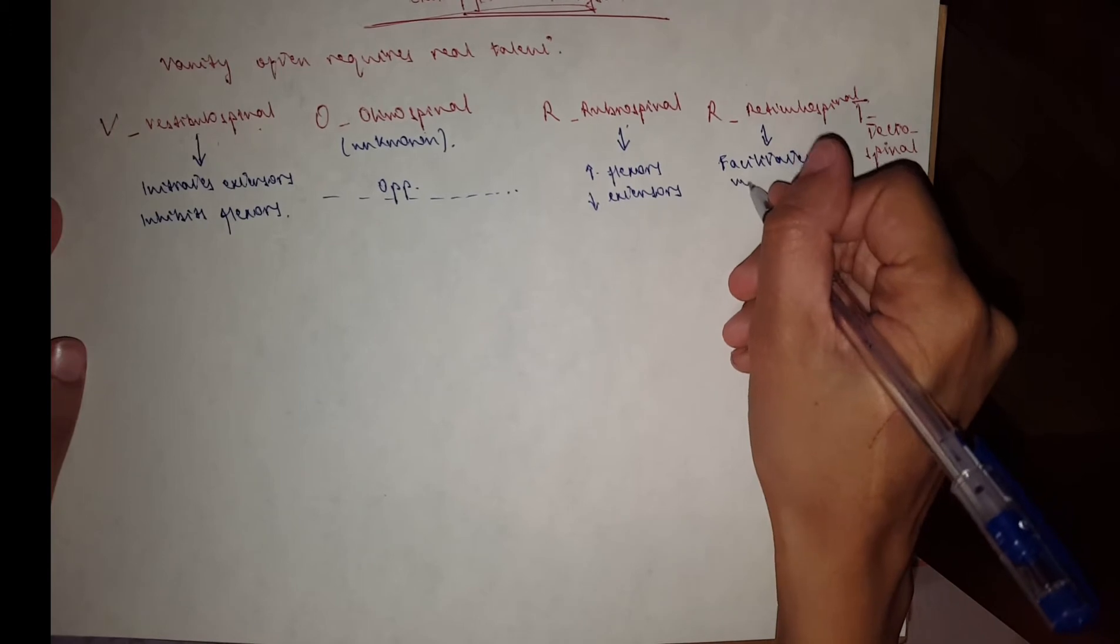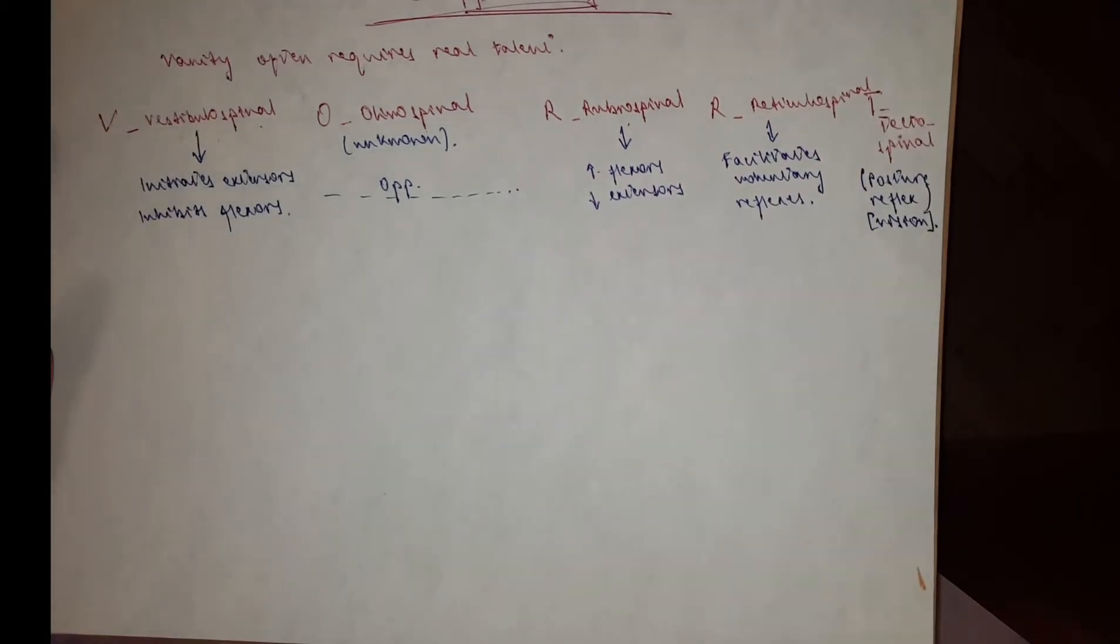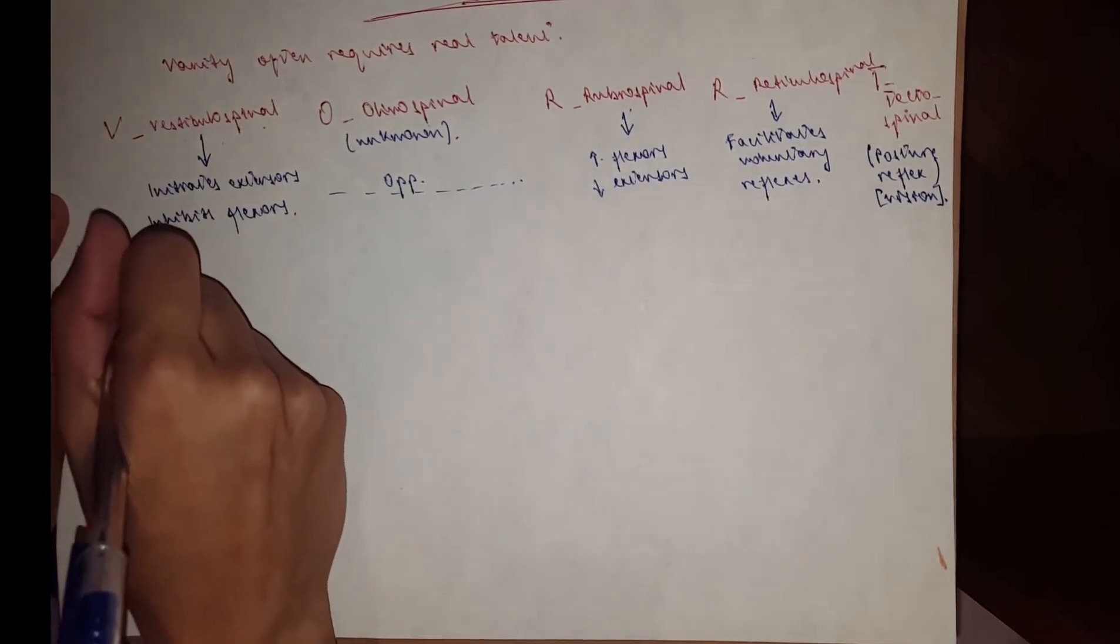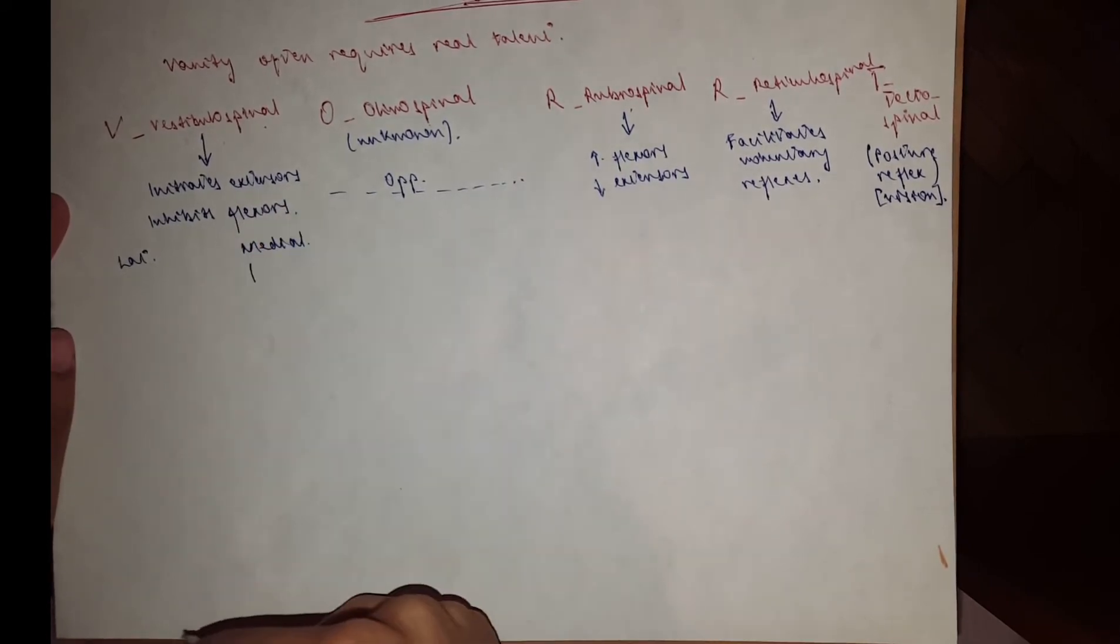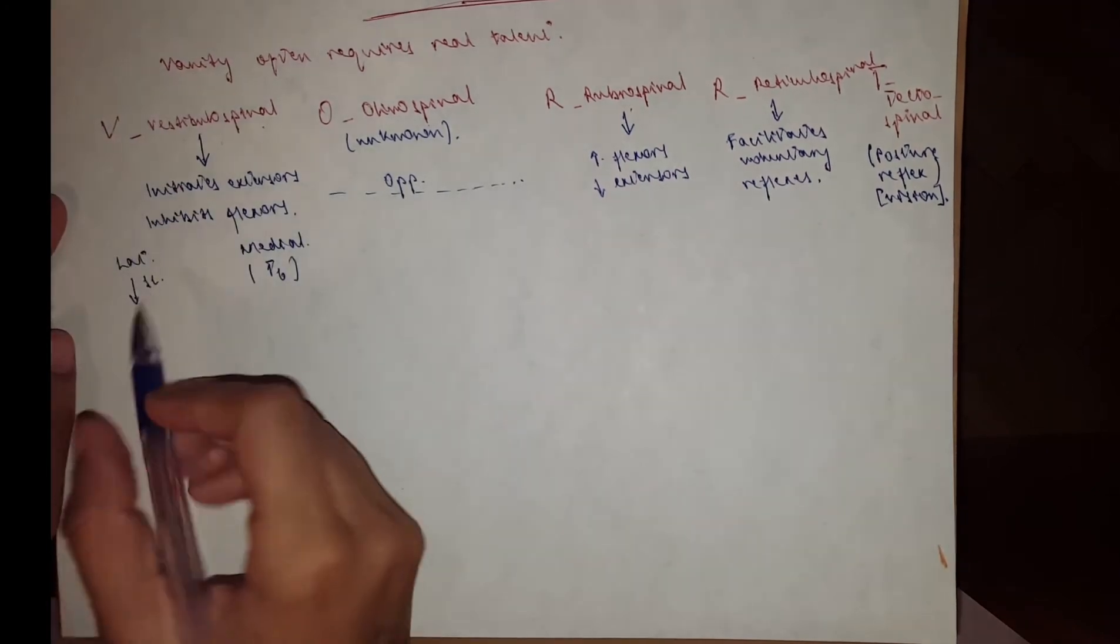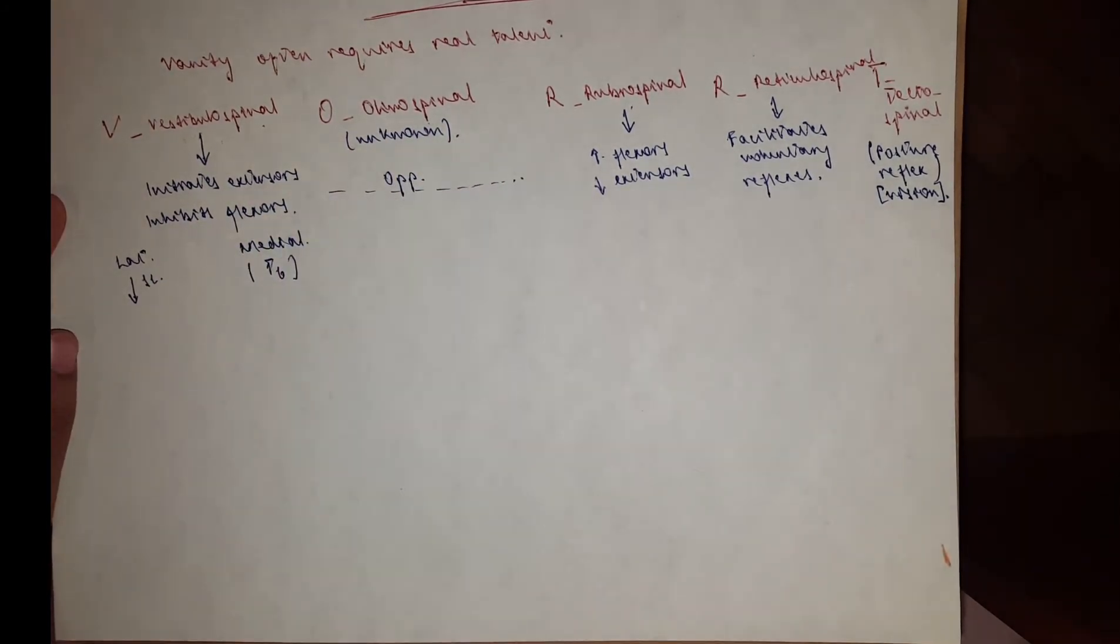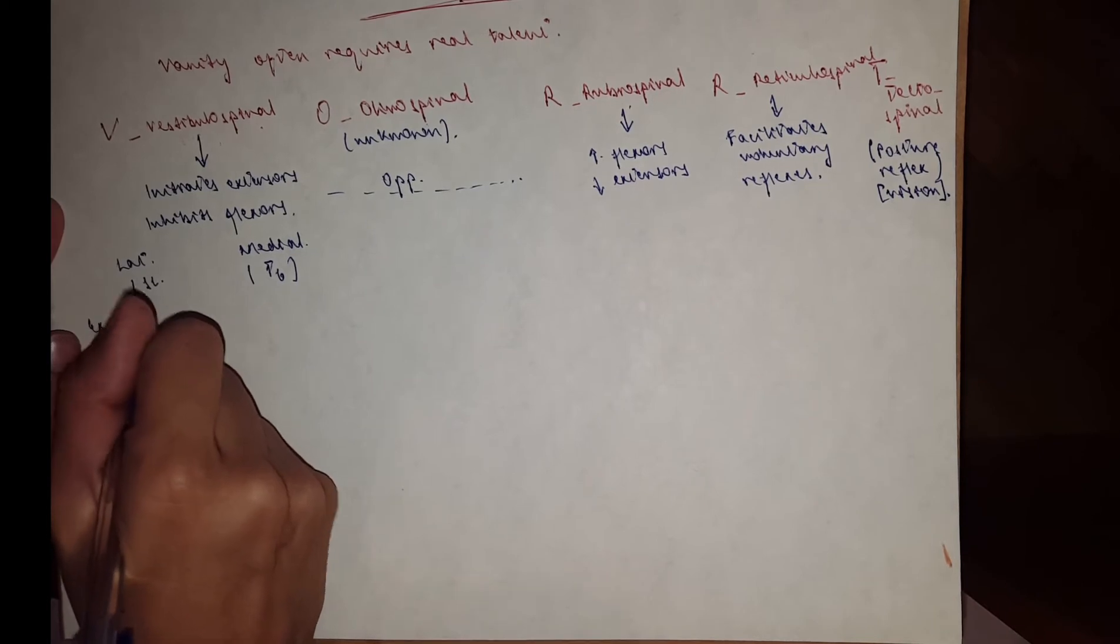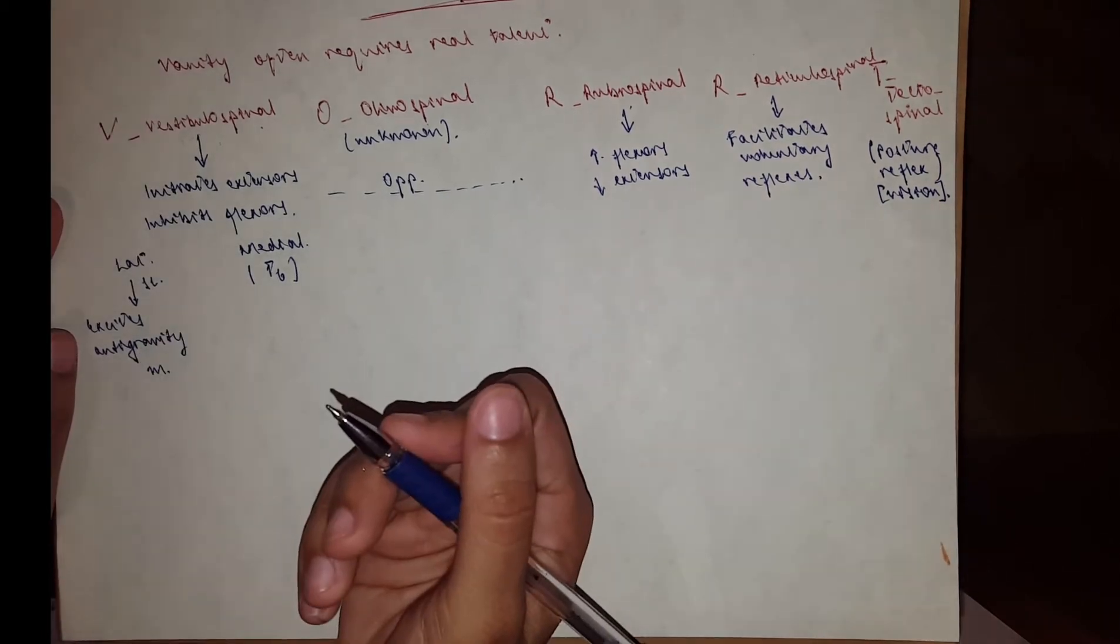Now we'll talk about the vestibulospinal. There are two tracts: the lateral vestibulospinal and the medial vestibulospinal. The medial one doesn't go much below, it stops at level T6. The lateral goes throughout all levels of the spinal cord. The lateral one is for postural changes, it excites anti-gravity muscles. The medial one is for the neck muscles for head movements like head and eye coordination.